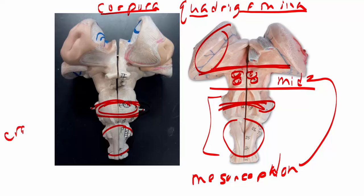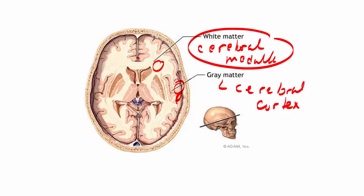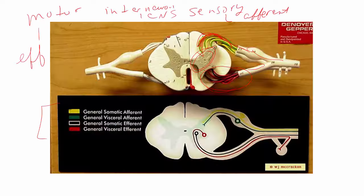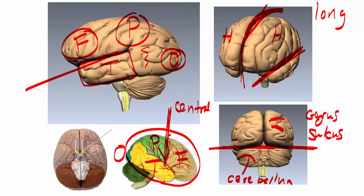There are 12 pairs of cranial nerves, but you only need to identify two of them on the models. The first is the olfactory nerve — cranial nerve one — visible as small long lines on the model. The second is the optic nerve — cranial nerve two — shown as yellow structures. The rest of the cranial nerves are too small on the models to be tested on.